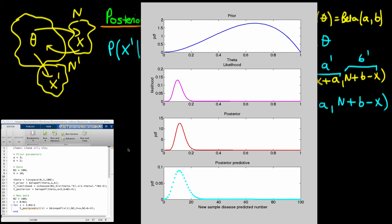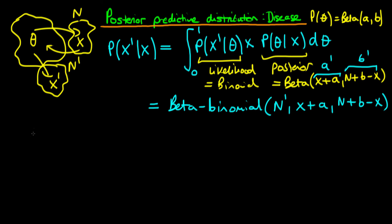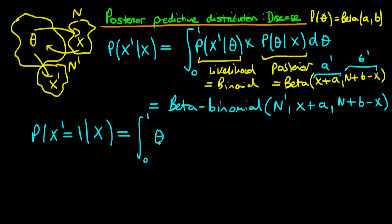I now want to derive the posterior predictive probability for the case of picking just one new individual from the population — that is, what is the probability that this one new person has the disease, given that we observed x individuals from our first sample having the disease. Because we're picking just one individual, the likelihood is simply theta. The integral becomes the integral of theta times the posterior probability of theta given x, across theta.